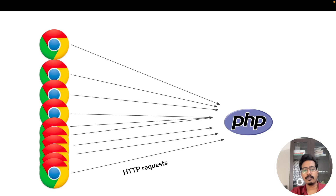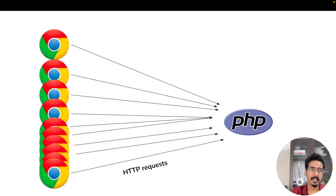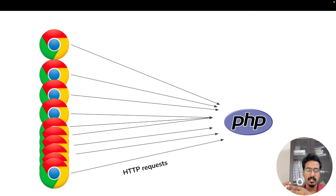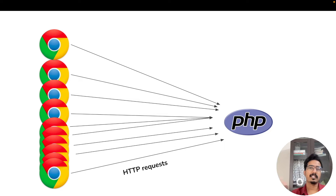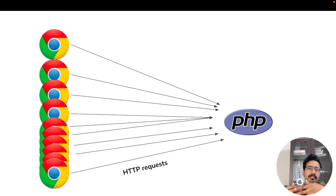In this video we'll quickly understand what are those limiting factors that decide how many requests your server can handle. This is the typical scenario: you have your backend application hosted on a server, and you have a lot of clients connecting to it with HTTP requests — GET requests, POST requests, all different types.